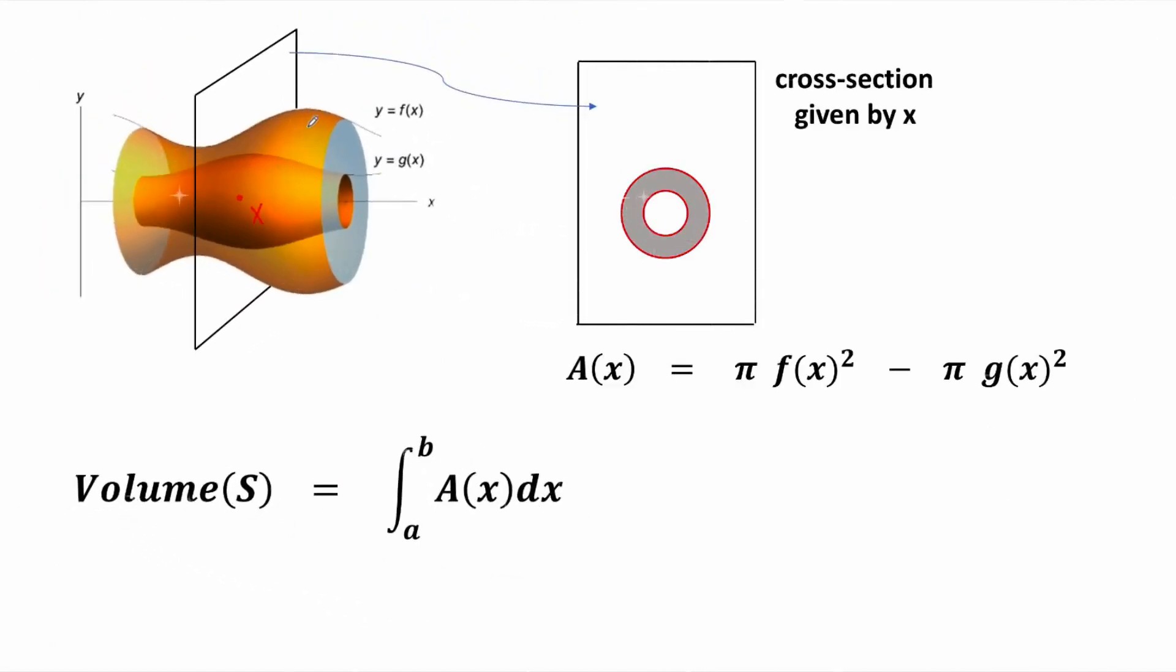To find the volume of this solid s, we need to integrate cross sections. To be more precise, for any point x in the interval a-b, we consider the perpendicular intersection of the solid with a plane that passes through the given point x. It looks like a disk with a hole in the middle.